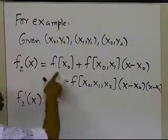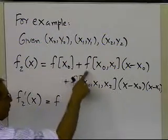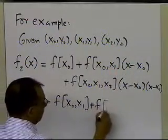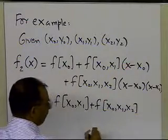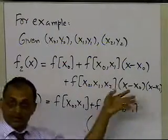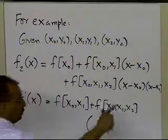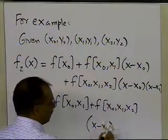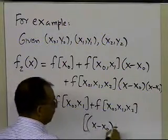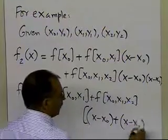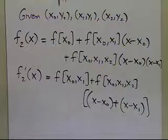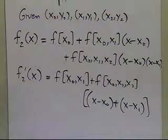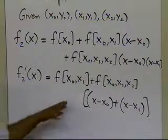To take the derivative, note that all the divided differences are constants. The first term gives 0, the second term gives f[x0, x1] times 1. For the last term, rather than expanding, use the product rule d/dx(uv): that gives f[x0, x1, x2] times [(x minus x0) times 1 plus 1 times (x minus x1)]. This way, no symbolic expansion is needed — just apply differential calculus knowledge directly to the original expression.